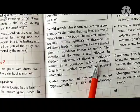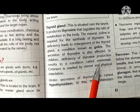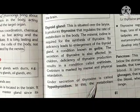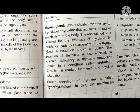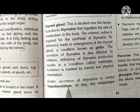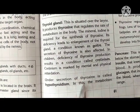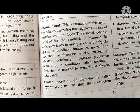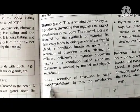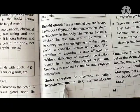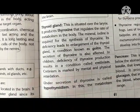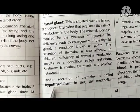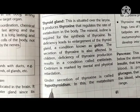Deficiency of thyroxin results in a condition called cretinism, which is marked by mental and physical retardation. Cretinism is also a disorder caused by the deficiency or under-production of thyroxin. Under-secretion of thyroxin is called hypothyroidism. If the thyroxin hormone is released in very small amounts, that condition is known as hypothyroidism, and if it is secreted in large amounts it is known as hyperthyroidism.